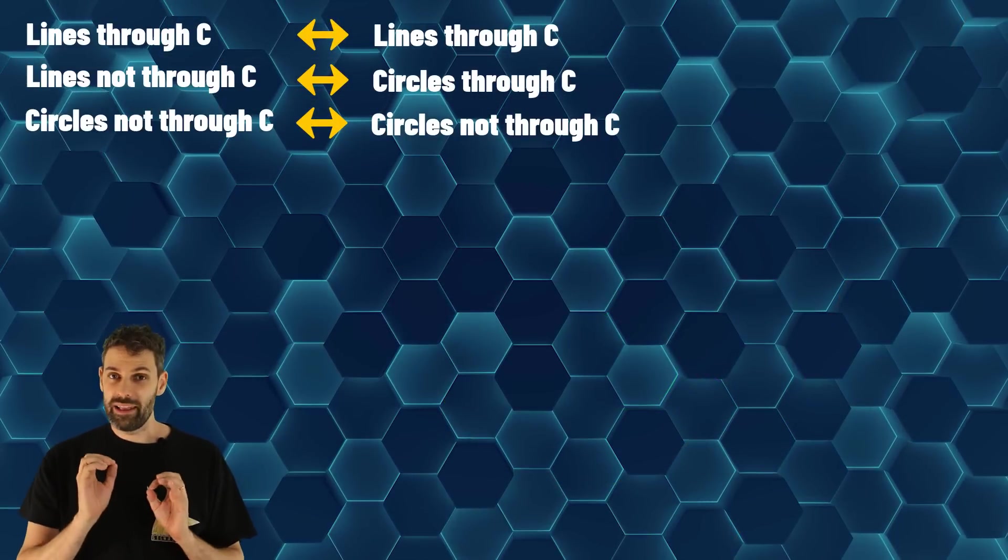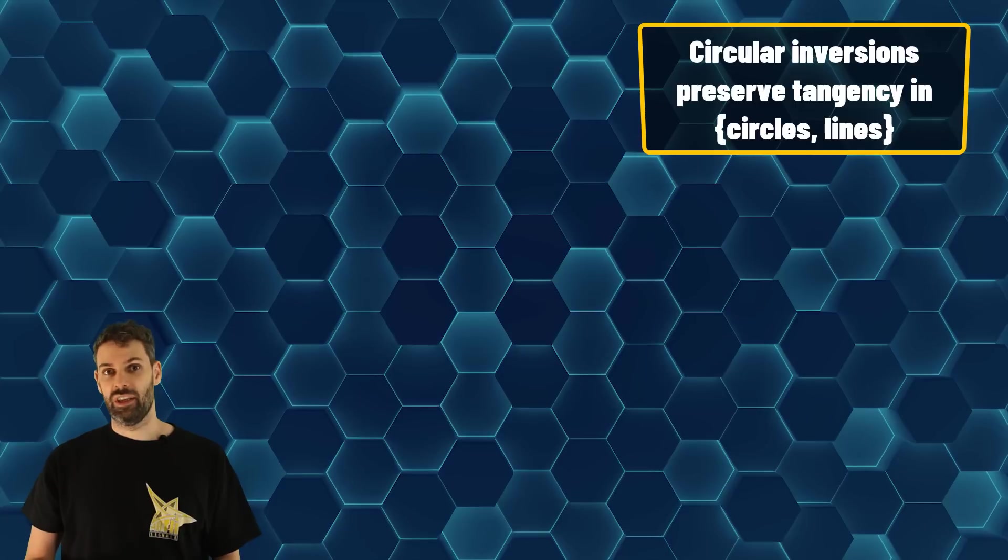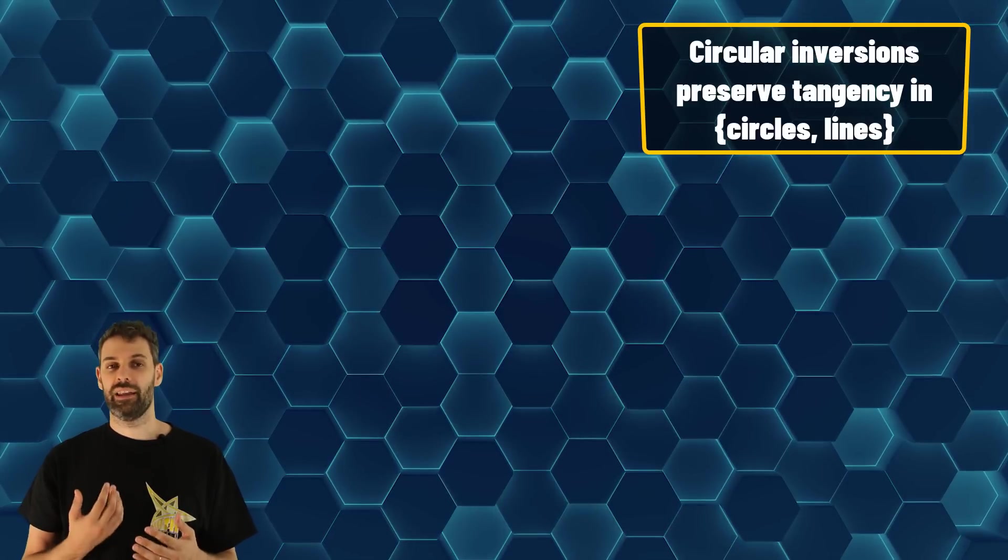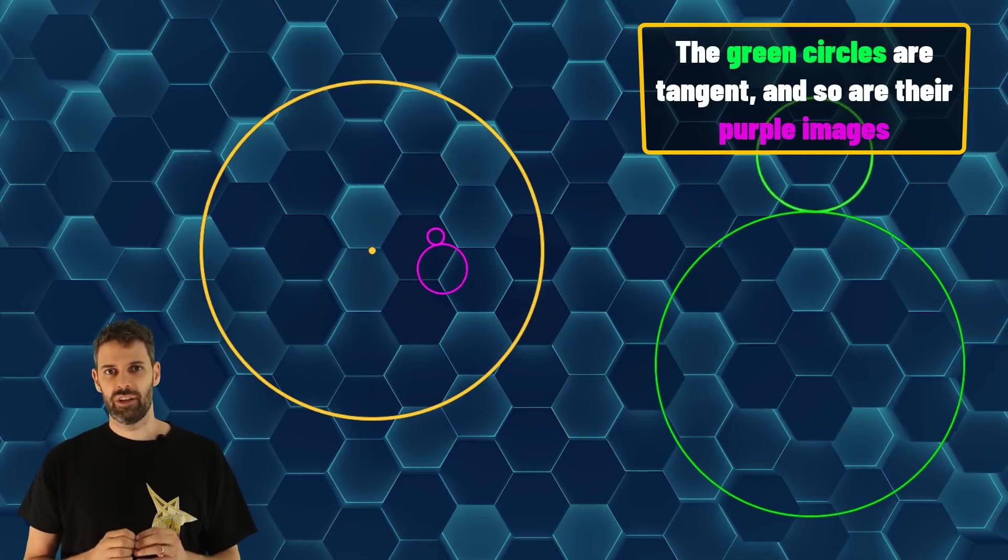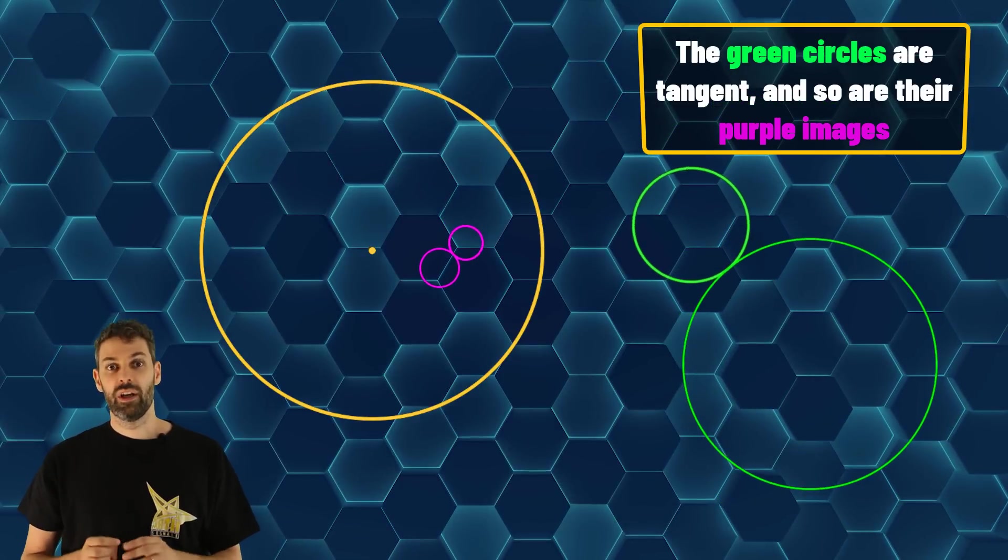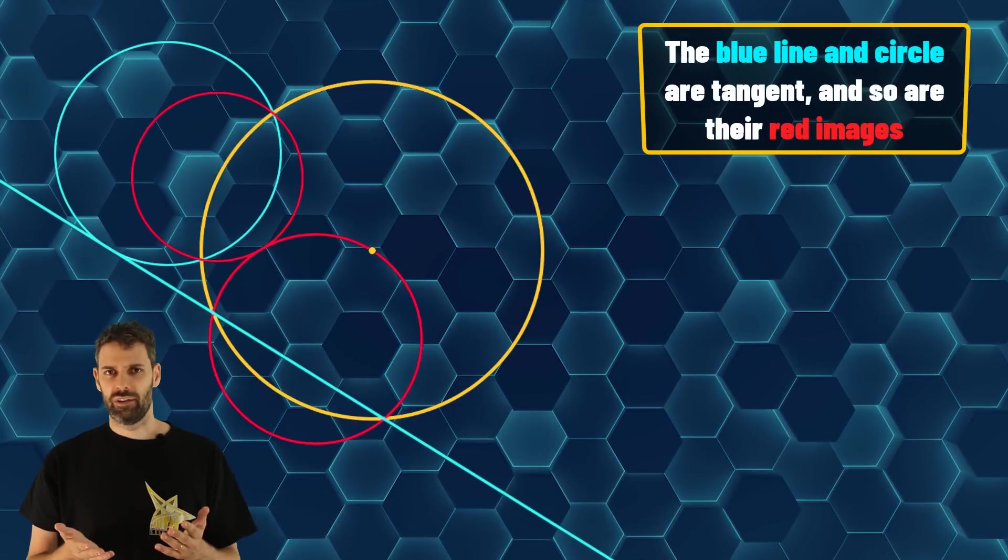There is one last fact that we need, which is that circular inversions preserve tangency in the set circles and lines. For instance, if you take two tangent circles, then their image will be tangent and the same holds if you have a line and a circle.